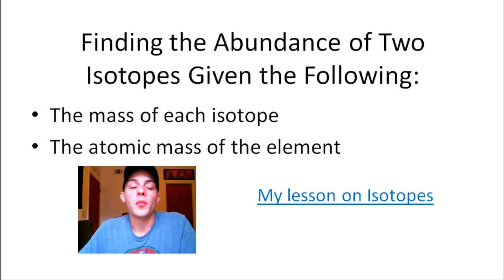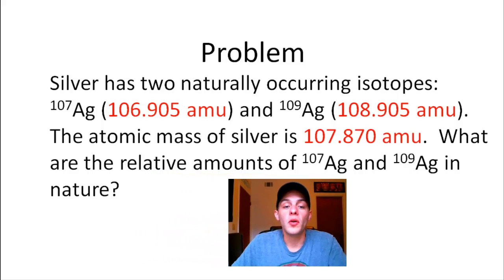So alright, let's get into the problem. So the problem says silver has two naturally occurring isotopes and those are silver-107 with a mass of 106.905 amu and silver-109 with a mass of 108.905 amu. It says that the atomic mass of silver is 107.870 amu and it asks what are the relative amounts of silver-107 and silver-109 in nature.